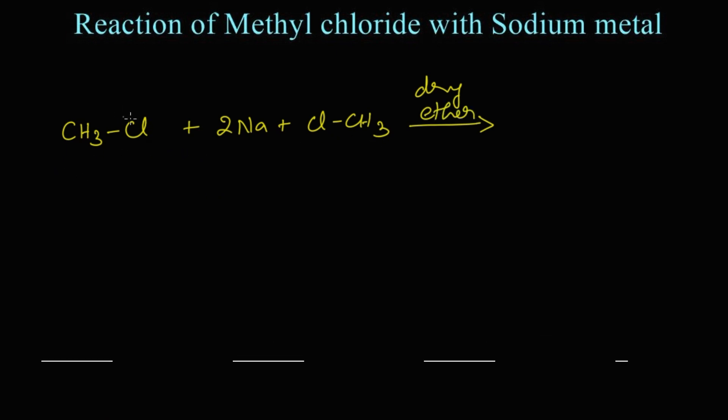This two methyl chloride lost their halogen, that is chlorine, as sodium chloride. That is, 2NaCl is left. The remaining thing, this methyl and this methyl will get attached together, so we get CH3 single bond CH3, which is known as ethane, that is alkane.